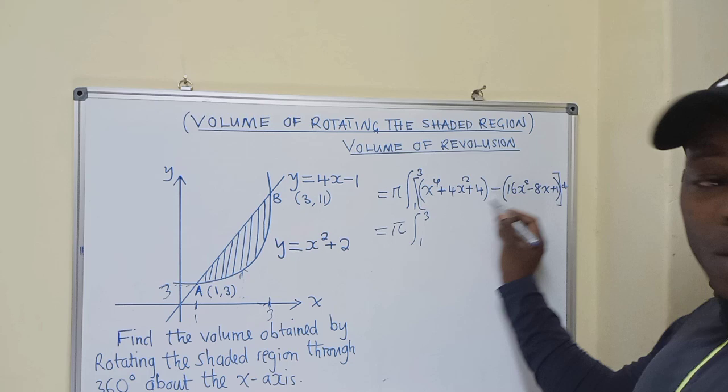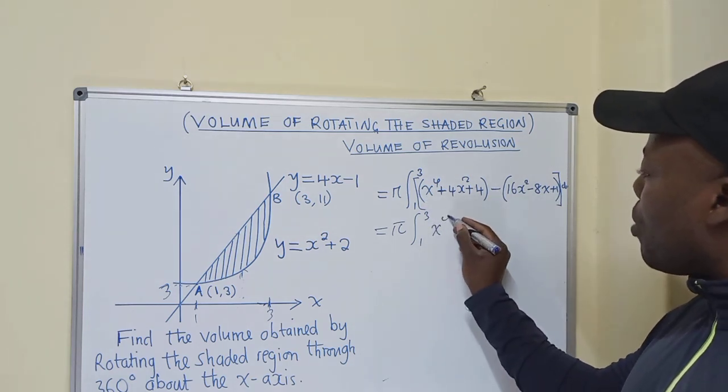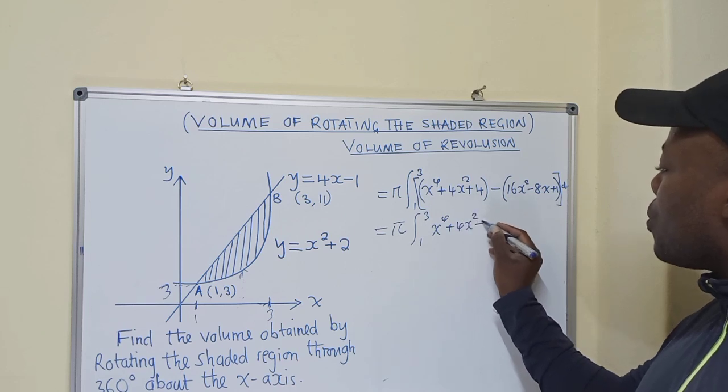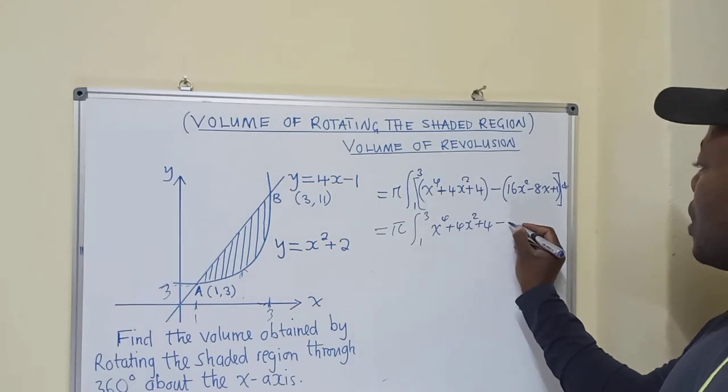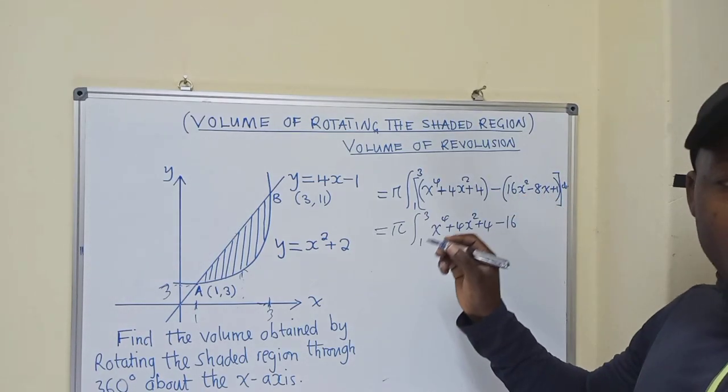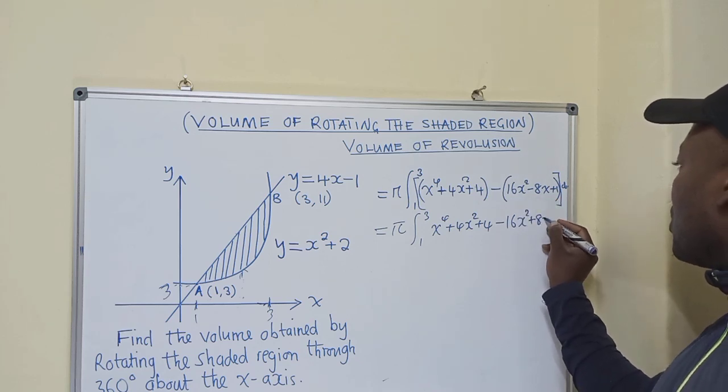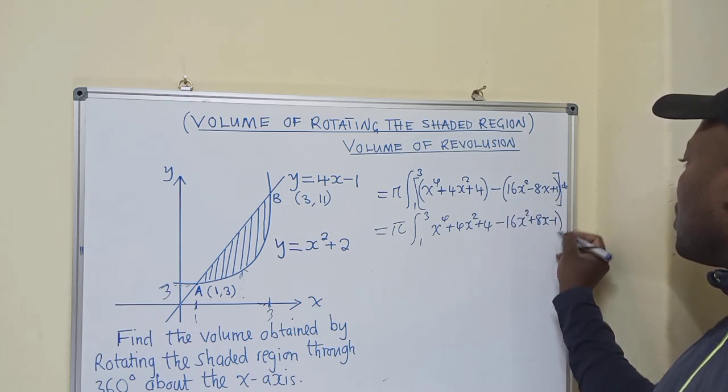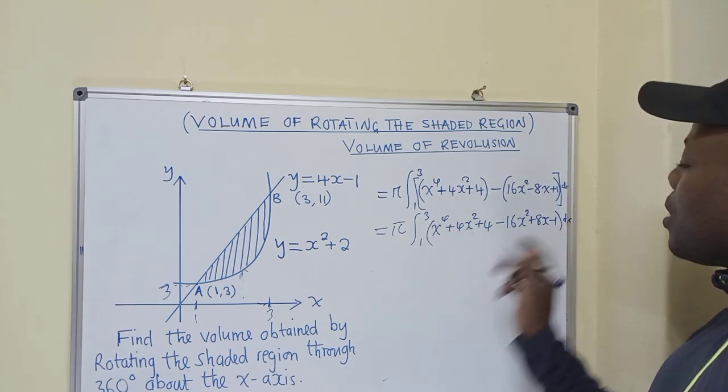We get rid of the brackets that are inside this and this. So write x^4 plus 4x^2 plus 4. Next, we start distributing this negative, or we multiply it by everything that is inside the brackets. So this is what we are getting, that is inside the brackets.